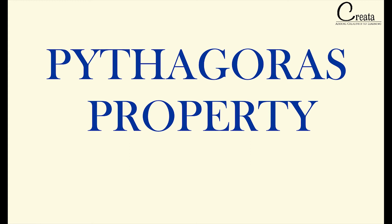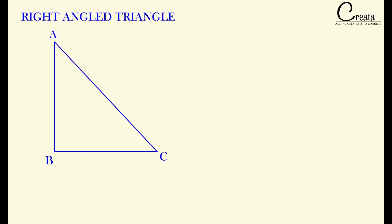Let's begin with a right angle triangle — a triangle with one angle as 90 degrees. We cannot have two angles of a triangle as 90 degrees. Tell me in the comment section why we cannot have two angles of a triangle as 90 degrees.